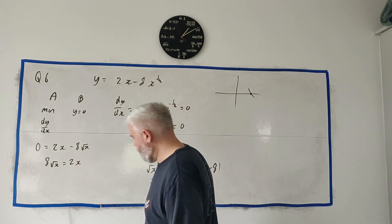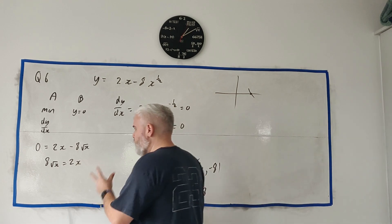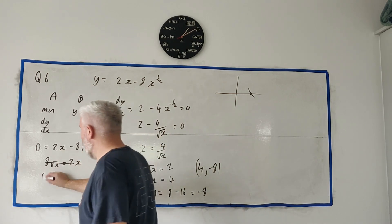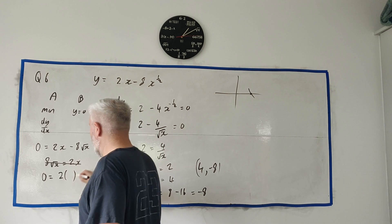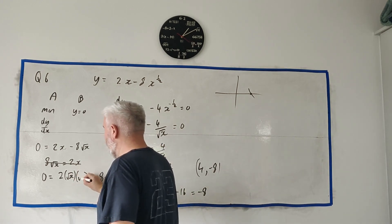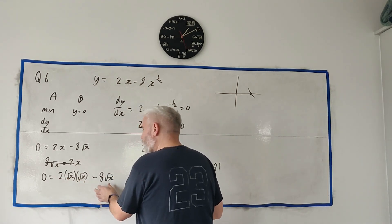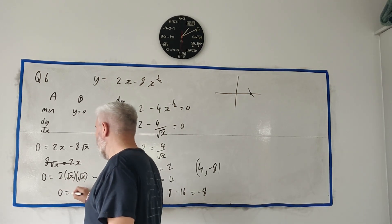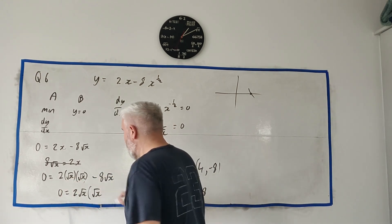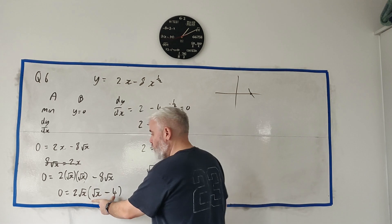A couple of ways we can do this. What you need to know is we can factorize x. The secret is x is actually made up of square root of x and square root of x. That means both of these terms have square root of x in it. So we could get 0 is equal to 2 times square root of x. It goes into this one square root of x times. And it goes into this one minus 4 times.